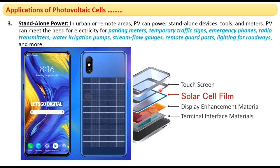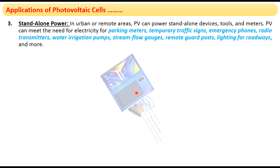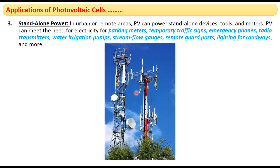Another application is mobile phones or emergency phones. On the back side of the mobile phone you can see a solar panel which supplies power to it. Next are transmitters and radio transmitters — cell towers and other transmitters also run with photovoltaic cells.